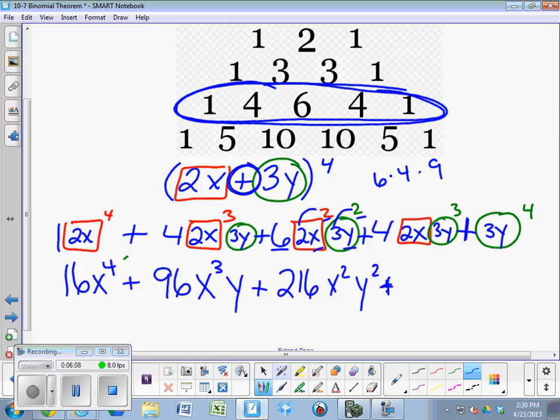Moving on. 4 times 2 is 8. Right here. 3 cubed is 27. So you've got to do 27 times 8. 216 again. So we have 216 x, y cubed.